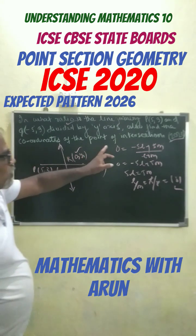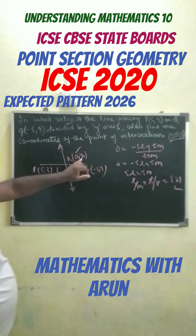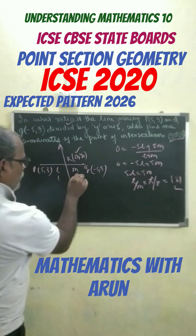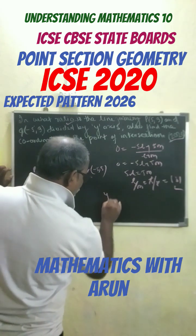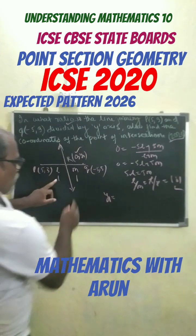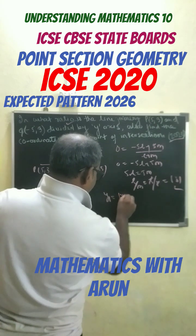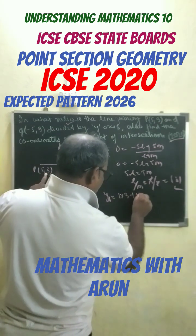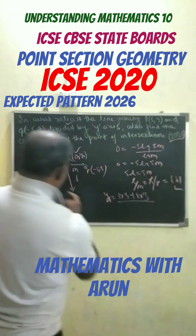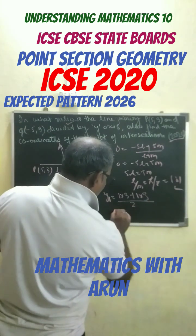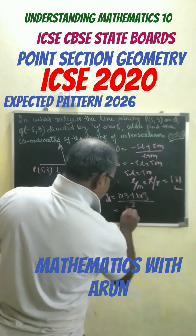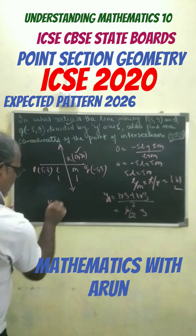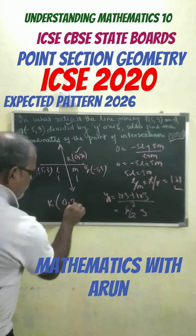Now we find the point of intersection. Since the ratio is 1:1, y1 = (1×3 + 1×3) / (1 + 1) = 6 / 2 = 3. Therefore the point K is (0, 3).